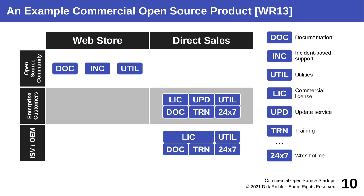The key takeaway is that nothing here is surprising — all enterprise software vendors in some form sell this, and you don't even see open source specifically. The license being sold is actually a commercial license to the very code that is also available under an open source license. This isn't confusing once you realize that as a copyright holder, you can license your property under multiple licenses — one being an open source license and another being the commercial license.